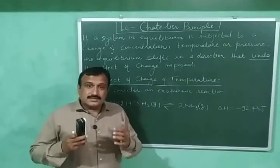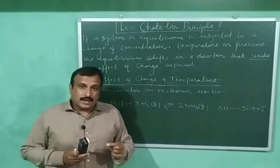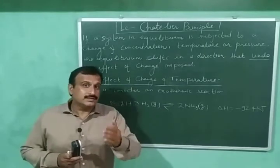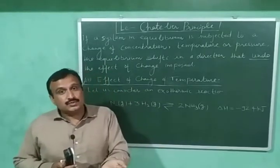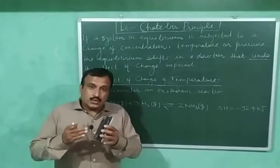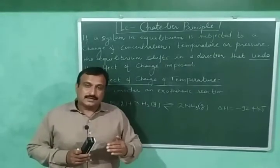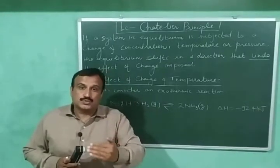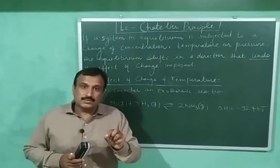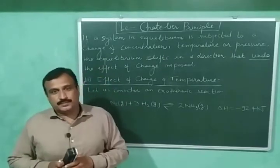Now, if we increase the temperature of the system, heat is supplied to the system. To undo or reverse the effect of this increased temperature, the heat supplied must be reabsorbed and the temperature should decrease again. This means the equilibrium will shift in the direction in which heat is absorbed. Since endothermic reactions proceed with absorption of heat, increase in temperature will shift the equilibrium in the direction of the endothermic reaction. Endothermic reactions are favored by increase in temperature.